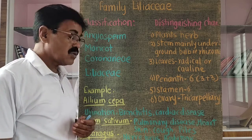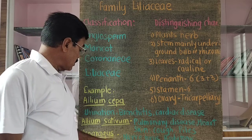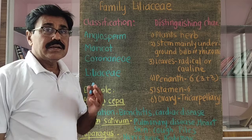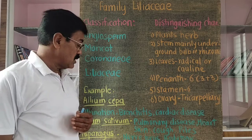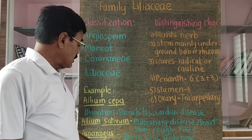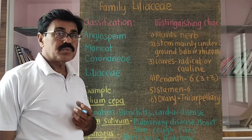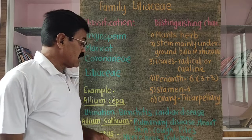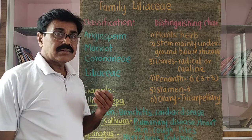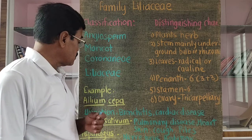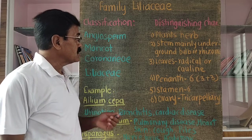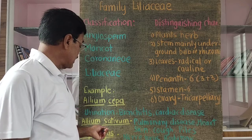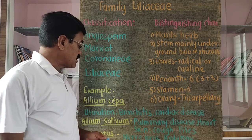The next plant is Gloriosa superba, also called Agnishikha or Kallavi. This wild plant, found in forests, has attractive red or yellow colored flowers and contains tubers like a potato at the base. It is used ornamentally and also for a number of medicinal purposes. This is about family Liliaceae, which includes important plants like Allium sativum, Allium cepa, and Asparagus racemosus.